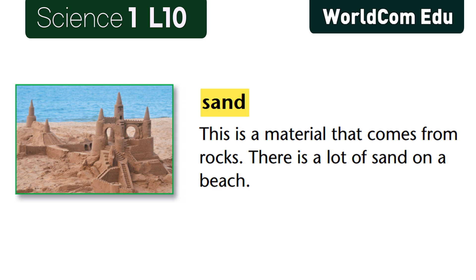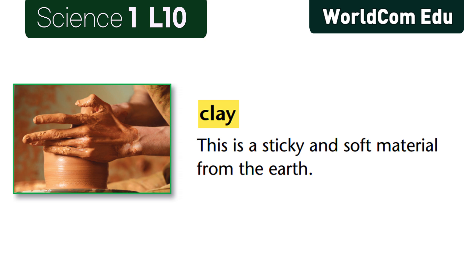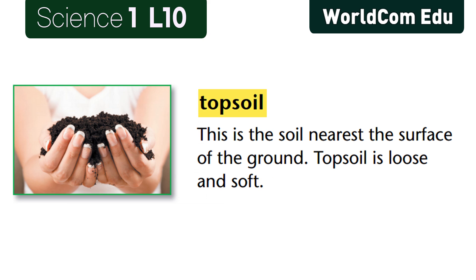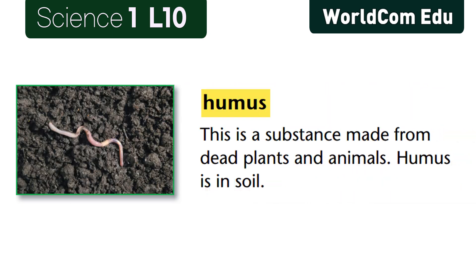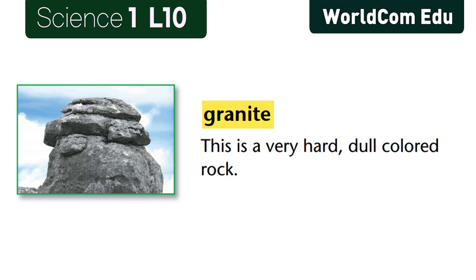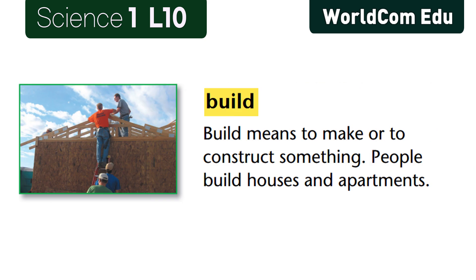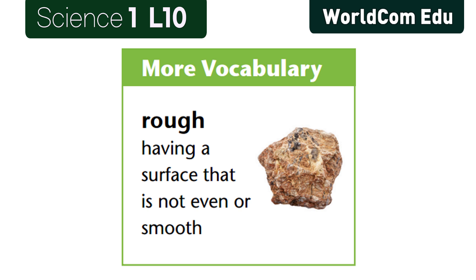Sand: a material that comes from rocks; there is a lot of sand on a beach. Clay: a sticky and soft material from the earth. Topsoil: the soil nearest the surface of the ground; topsoil is loose and soft. Humus: a substance made from dead plants and animals; humus is in soil. Granite: a very hard, dull-colored rock. Build: to make or to construct something; people build houses and apartments. Rough: having a surface that is not even or smooth.